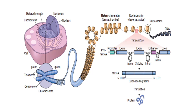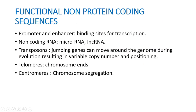Promoters help initiate transcription whereas enhancers modulate gene expression. Pre-mRNA is converted to mRNA by splicing, where introns are removed, forming an mRNA with an open reading frame with a 5' untranslated region and a 3' untranslated region. Finally, this mRNA is translated into a protein. The major classes of non-protein-coding sequences are promoters and enhancers, which are binding sites for transcription factors.